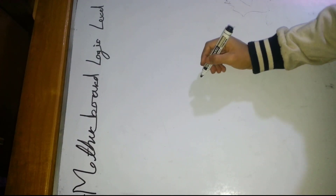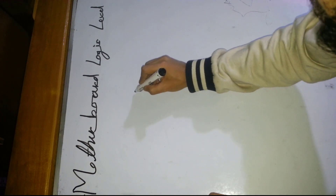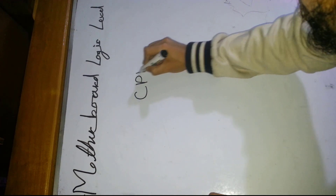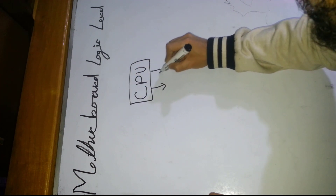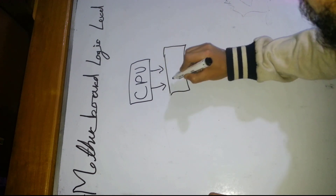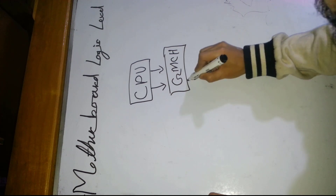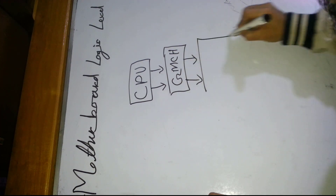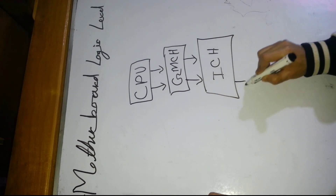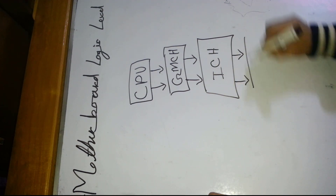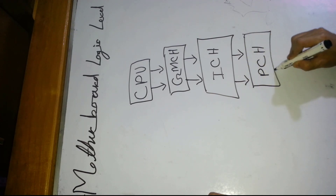This is the chart showing the Motherboard Logic Level. The components include: CPU, Central Processing Unit; GMCH, Graphics and Memory Controller Hub; ICH, Input Controller Hub; and PCH, Platform Controller Hub.